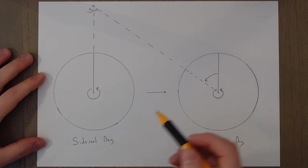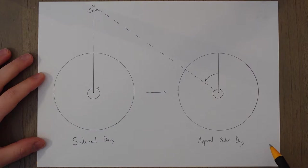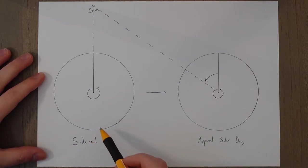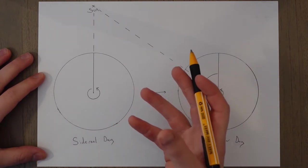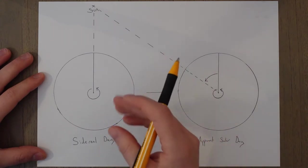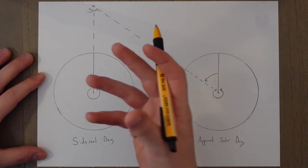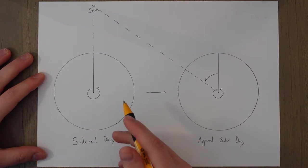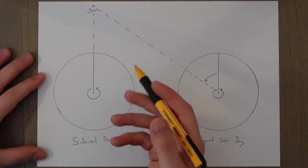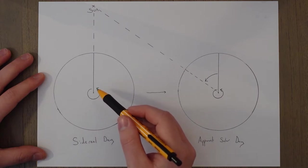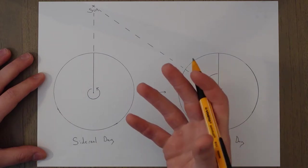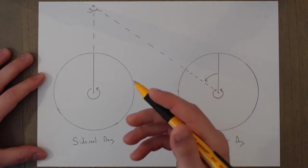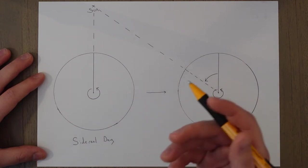You basically have a sidereal day and an apparent solar day. A sidereal day is defined as the time between two consecutive transits of the first point of Aries. The first point of Aries is basically a zero point for measuring positions of celestial objects like stars and moons. What this means in practice is that the sidereal day is the time it takes for the Earth to rotate 360 degrees, or 24 hours, or with more precision 23 hours, 56 minutes and 4 seconds.